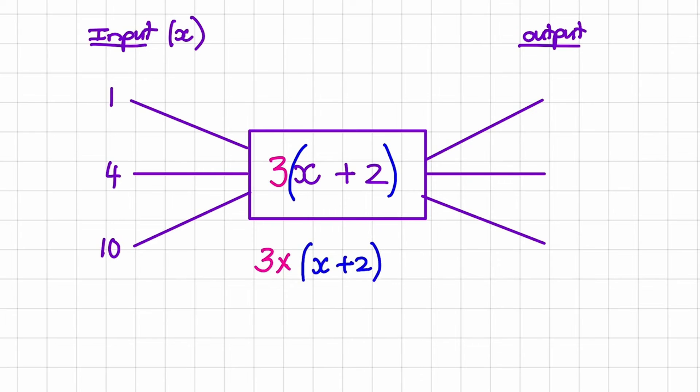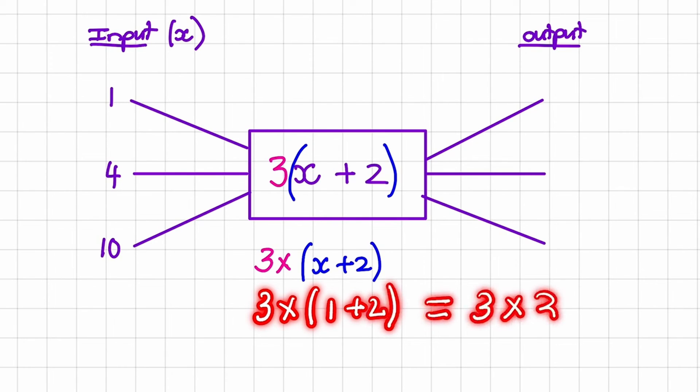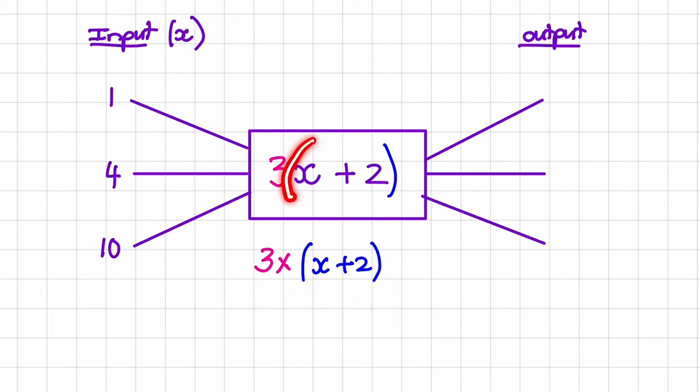So in our first value we'll have 3 times the answer of 1 plus 2. And that is the same as saying 3 times 3. So I do the calculation of the brackets by itself. So when I replace x with 1, I first add 1 and 2 together to get 3 on the inside of the bracket. So it becomes 3 times 3 and that answer is 9.